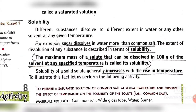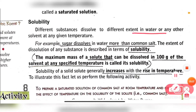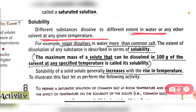Different substances dissolve to different amounts in water, or any other solvent, at any given temperature. At a given temperature, all substances do not dissolve at the same amount in water. For example, sugar dissolves more than common salt in water — that is, the solubility of sugar is more. So the extent of dissolution of any substance is described by the term solubility.